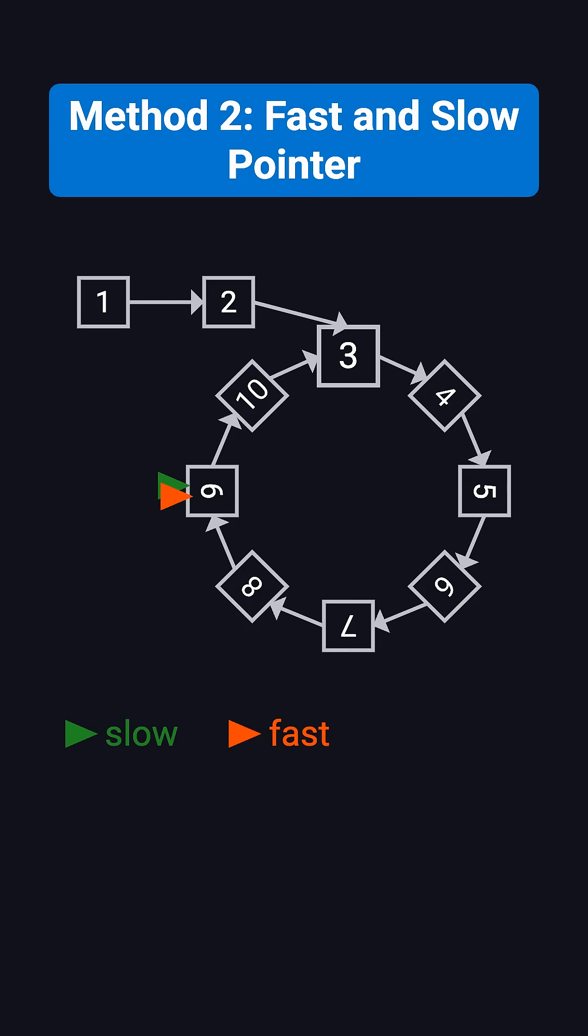Second, you leave the slow pointer where it is, place a new pointer, P1, at the head of the list, and move both P1 and the slow pointer one step at a time. The point where they meet again is the start of the cycle.